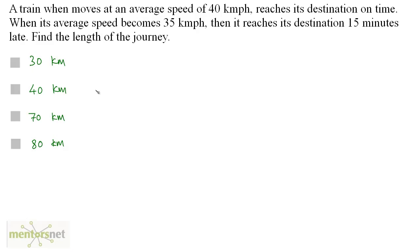A train moving at an average speed of 40 km/h reaches its destination on time. When its average speed becomes 35 km/h, it reaches 15 minutes late. Find the length of the journey.